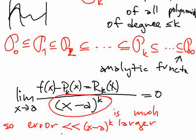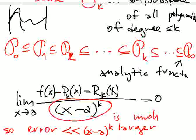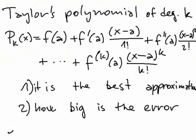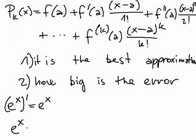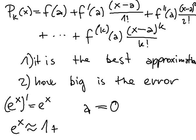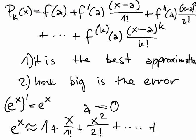This is still not strong enough — we know the error is smaller, but the question is how much. Suppose you want to calculate the value of e. You take the function e^x, and you know that if you derive it you get e^x. If you write down the Taylor polynomial around point A = 0, you get 1 + x/1! + x²/2! + ... + x^K/K!. You know your error will be asymptotically smaller than x^K.